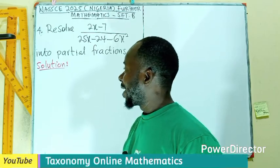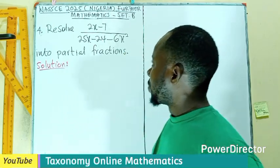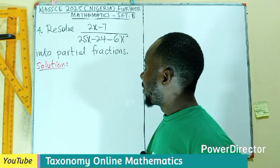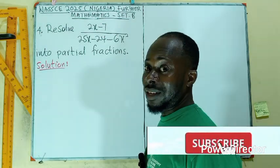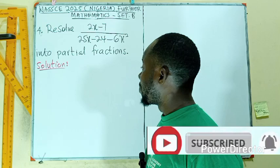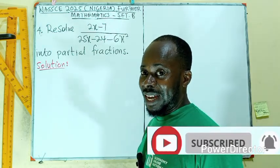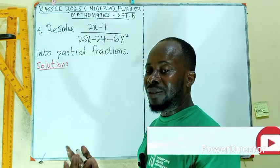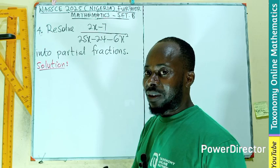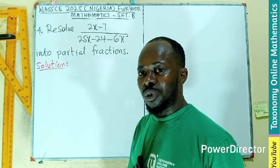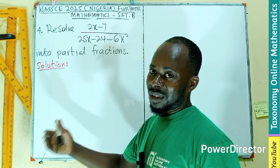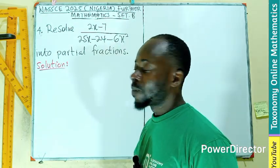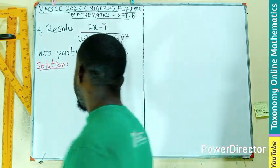Welcome to question number 4. We are to resolve 2x minus 7 divided by 25x minus 24 minus 6x squared into a partial fraction. To understand this, I have a tutorial on the topic partial fraction and the rational function. Go to YouTube, look for the playlist and have all the types of resolving a fraction into a partial fraction.